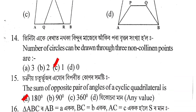Next question: How many circles can be drawn through three non-collinear points? The correct answer is Option C: one.